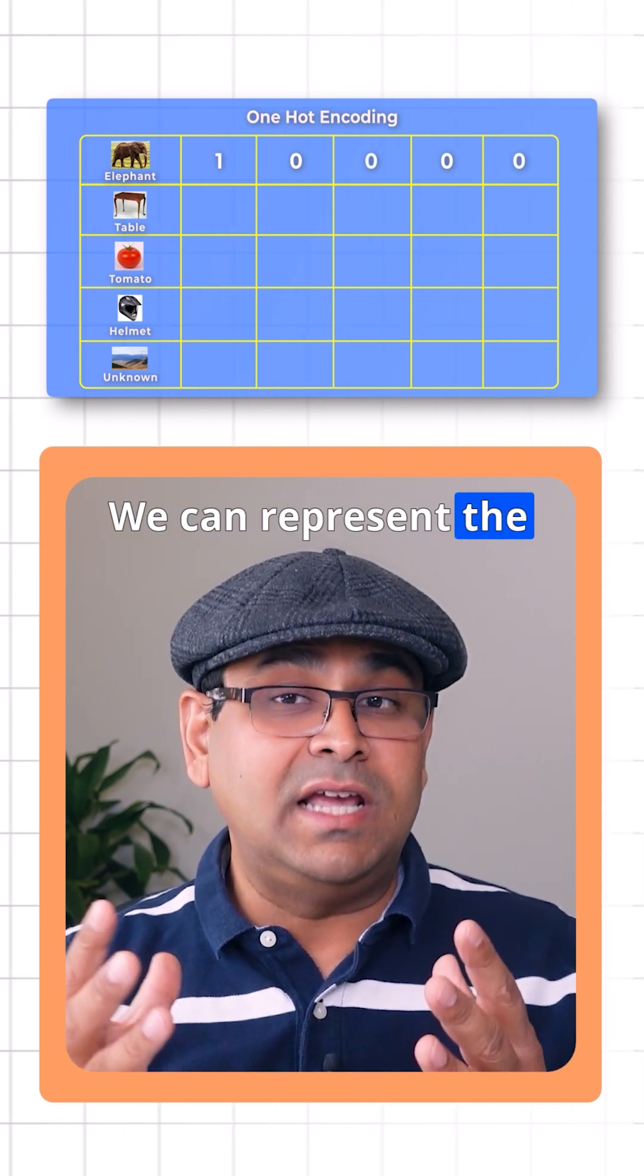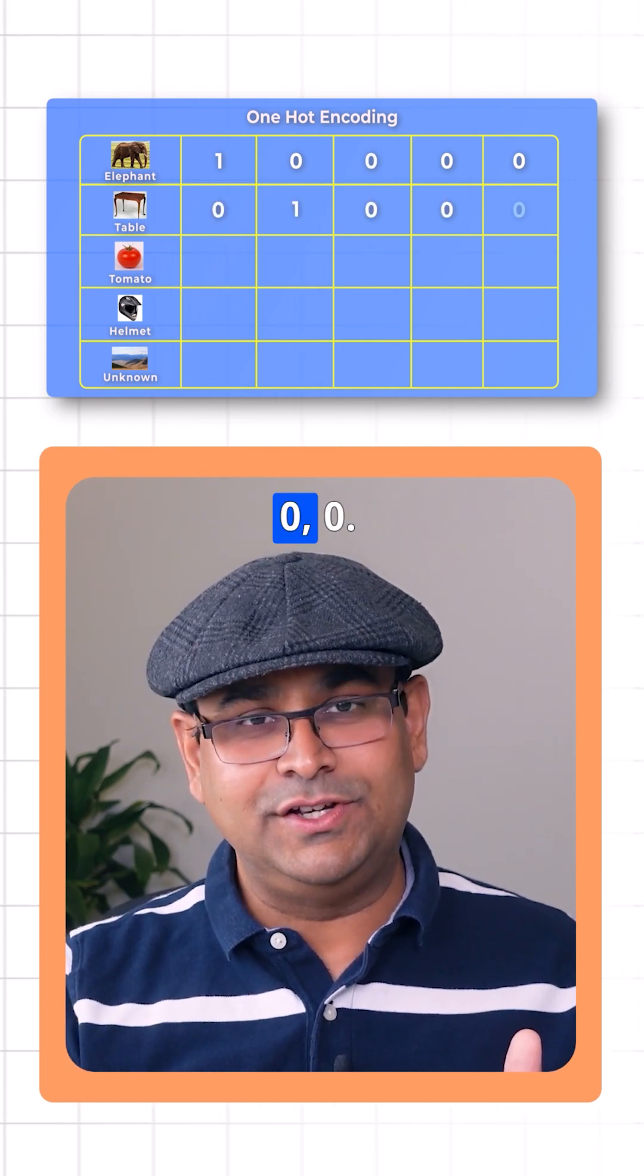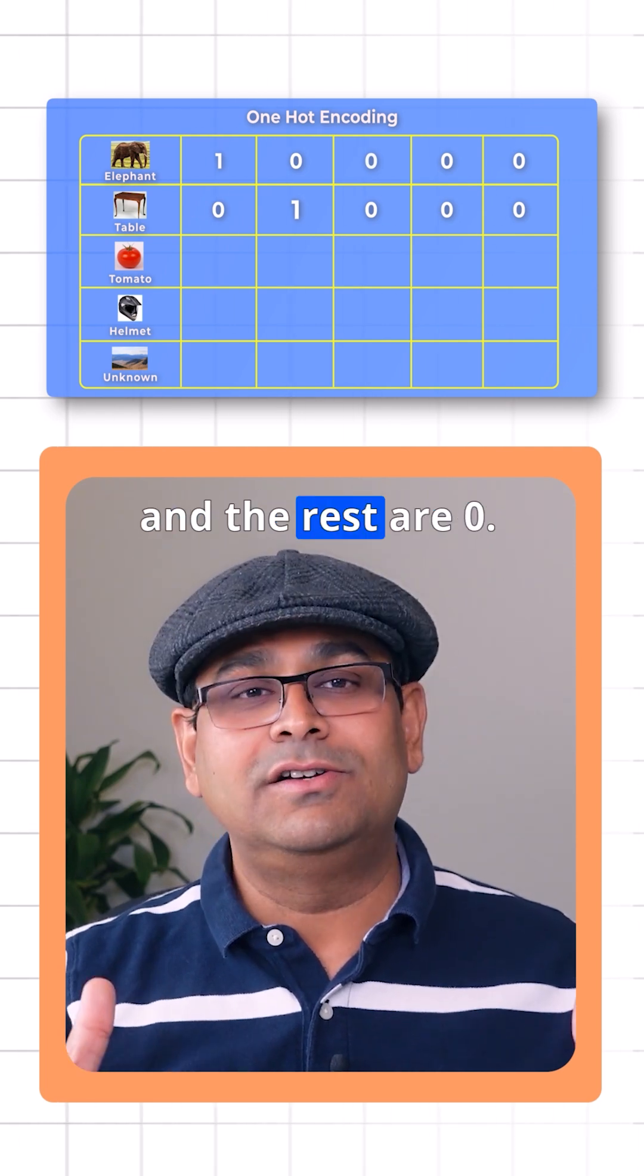We can represent the table class using zero, one, zero, zero, zero. The second element is one and the rest are zero.